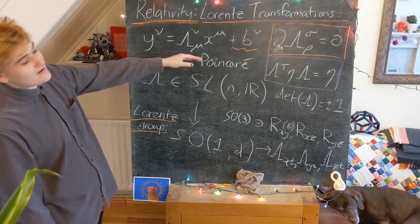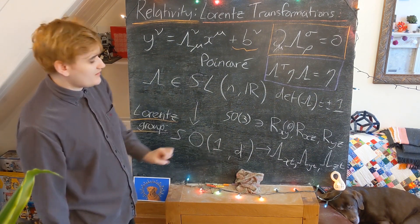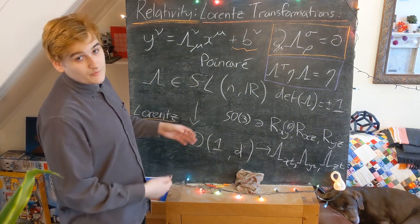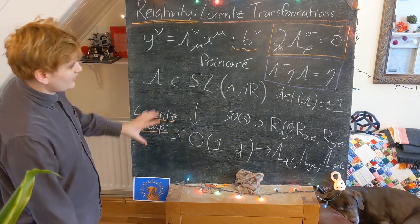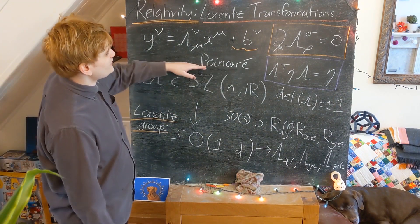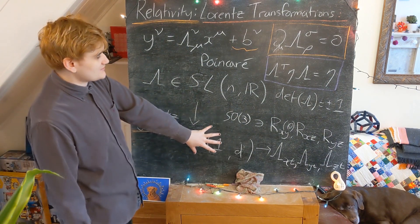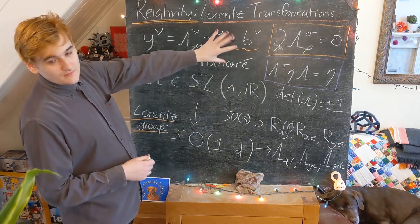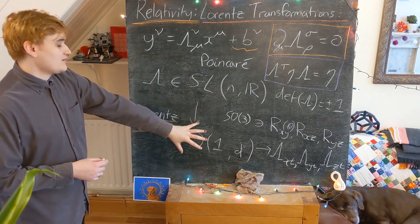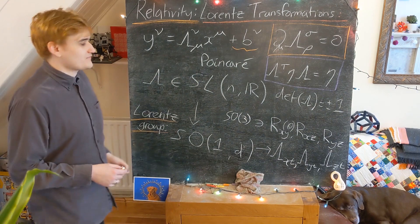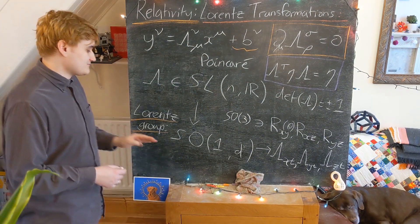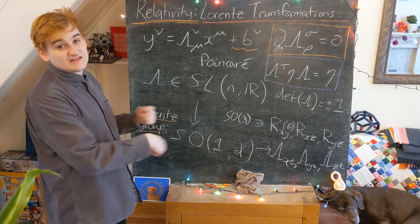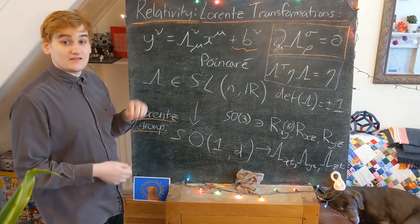But if we now include these Poincaré transformations into our group structure, we effectively are now enlarging this Lorentz group to a larger group, which is known as the Poincaré group. But I want to just make it really clear that enlarging the group doesn't in any way affect the Lorentz group. The enlargement just kind of adds on these transformations as an extra possible four transformations.